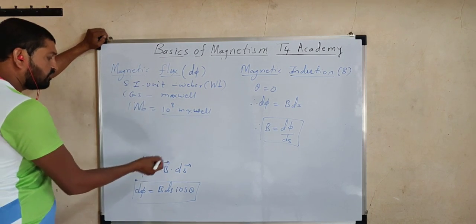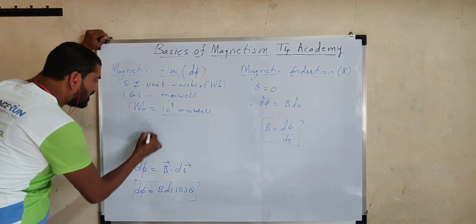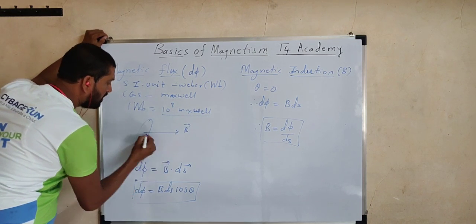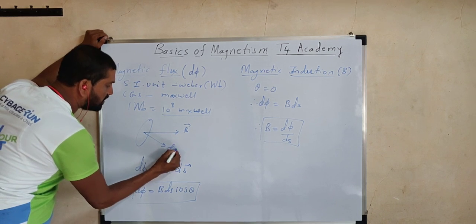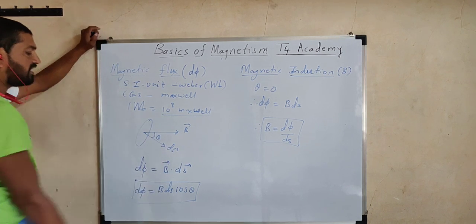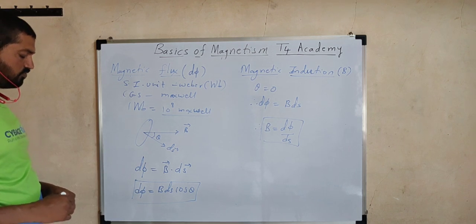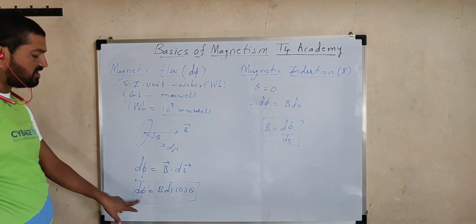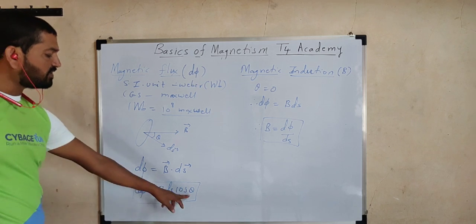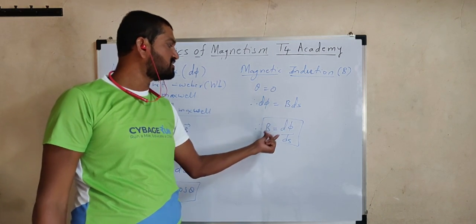Every time the induction vector and area vector may not be parallel. Diagrammatically, if this is induction B-bar and this is area vector dS-bar, and the angle between them is θ, then magnetic flux is always given by dΦ equals B dS cosθ. If θ is 0, cos 0 is 1, we get dΦ equals B dS.